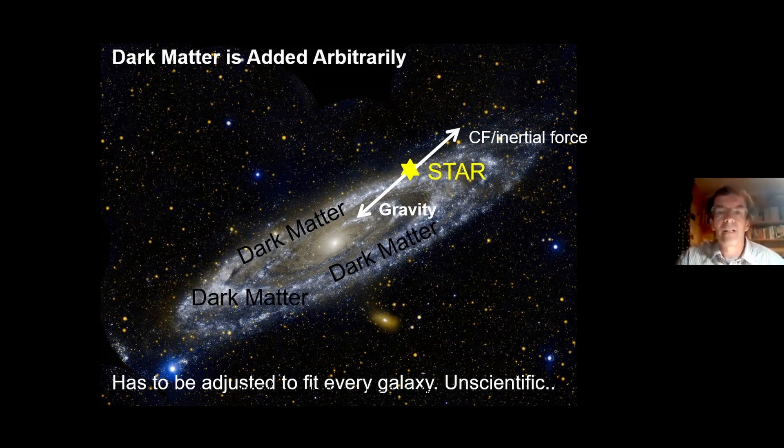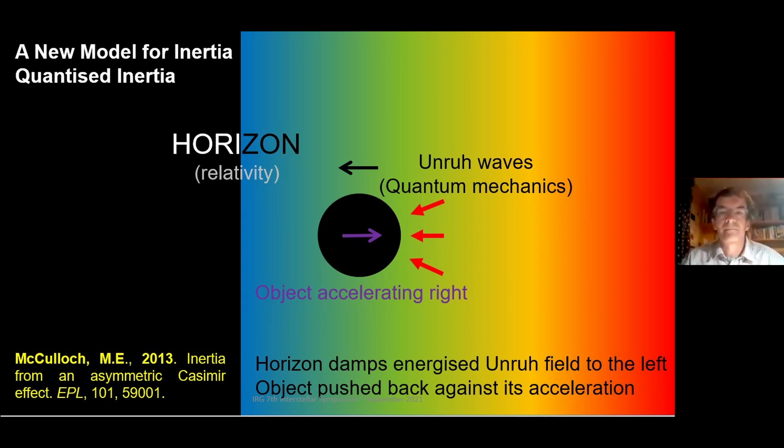Astrophysicists tend to add dark matter to galaxies to boost the gravitational force to hold the stars in, but I don't like this solution because it's very arbitrary and it doesn't seem scientific to me. So I've suggested an alternative model for inertial mass called Quantized Inertia.